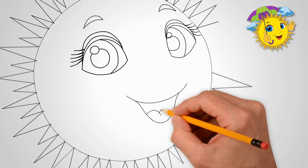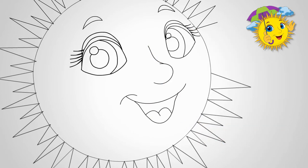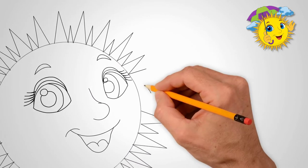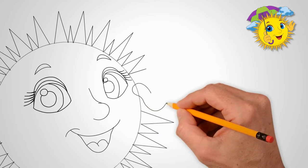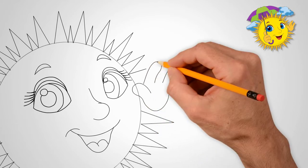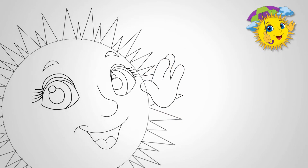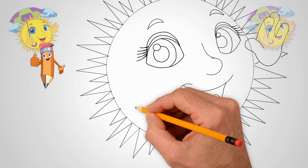Draw eyebrows over each eye. Two eyebrows in our sun, as two eyes. Now draw the mouth. Our sun is merry. It gives everyone joy and warmth. Draw a smiling, open mouth. Draw the tongue in the middle of the mouth. We draw cheeks on both sides.